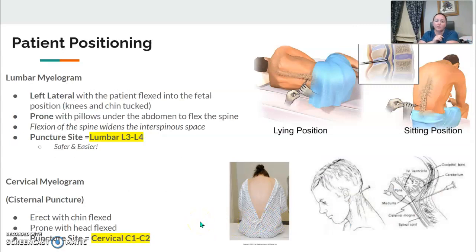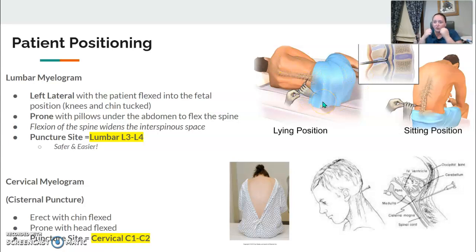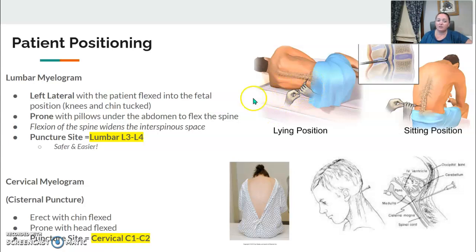Positioning for lumbar and cervical myelograms: for the lumbar myelogram, the patient is either left lateral — tucked into the fetal position with chin to chest and knees to chest — or prone with a couple of pillows underneath the belly. Flexing the spine opens the interspinous space. The puncture site for lumbar is L3-L4, and that is a space you need to know.